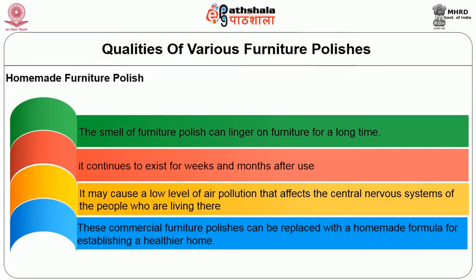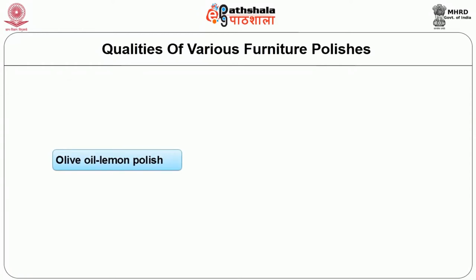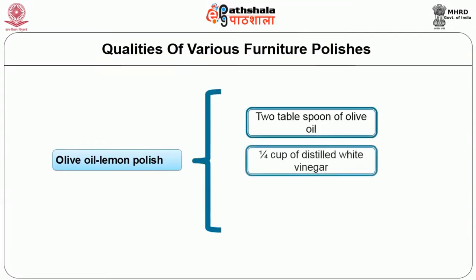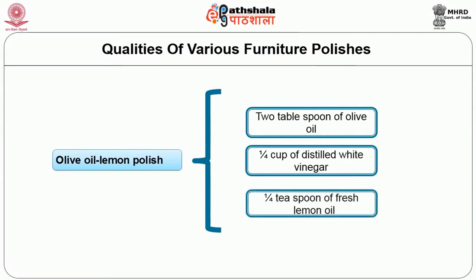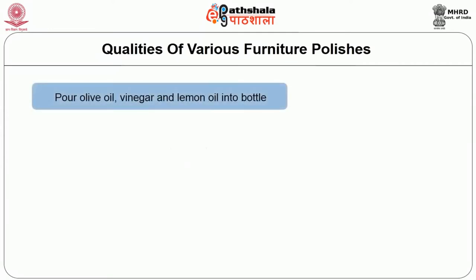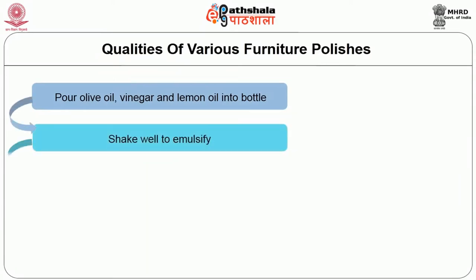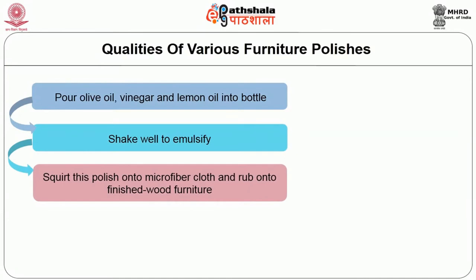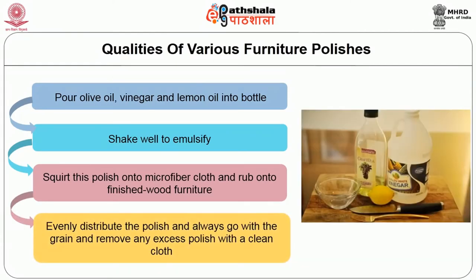The first homemade polish is olive oil lemon polish. To prepare this you will need 2 tablespoons of olive oil, 1/4 cup of distilled white vinegar, and 1/4 teaspoon of lemon oil or fresh lemon juice. Pour the olive oil, vinegar, and lemon oil into a bottle and shake well to emulsify. Squirt onto a microfiber cloth and rub evenly onto finished wood furniture, going with the grain. Remove any excess polish with a clean cloth.